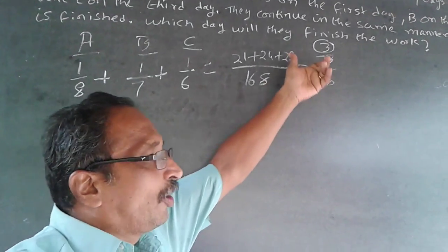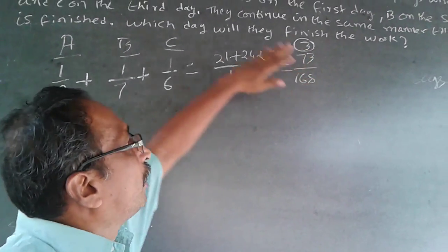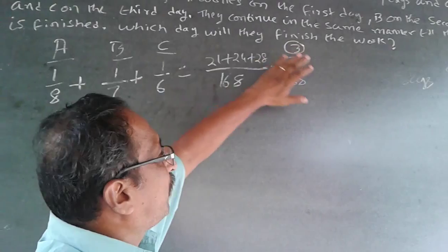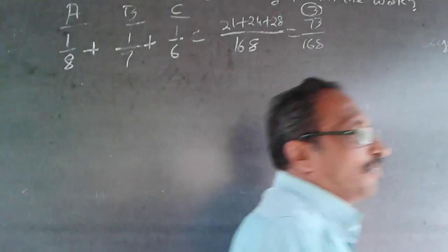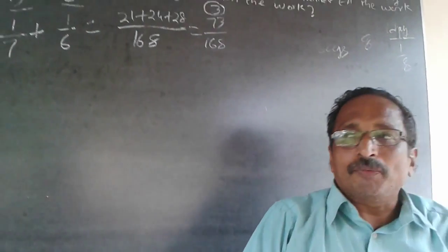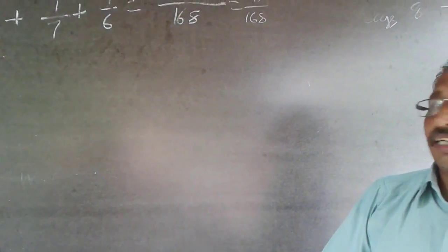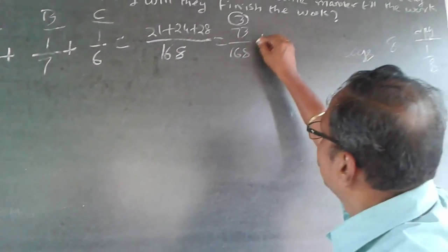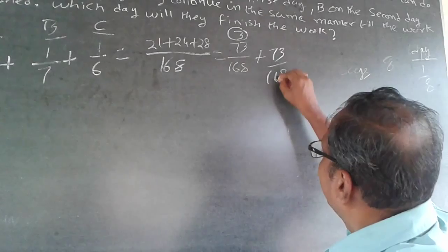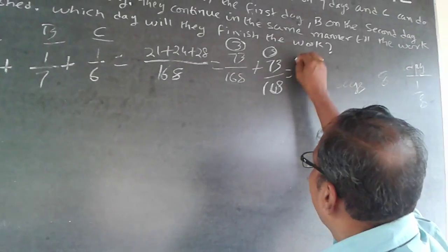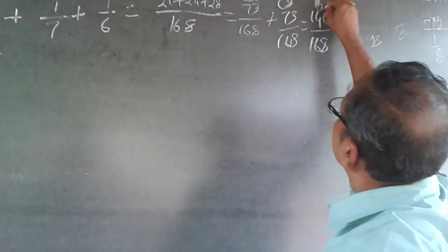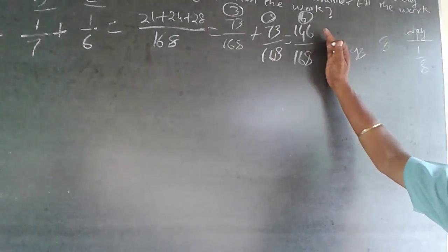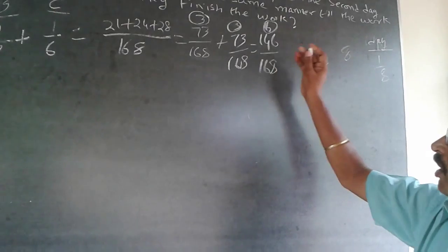When you see the numerator and denominator, the numerator (73) is less than 50% of the denominator (168). So one more cycle of 3 days is required. Adding another 73/168 for another three days gives 146/168 in six days. So the output is 146/168 after six days.